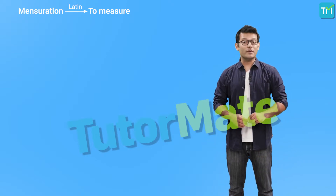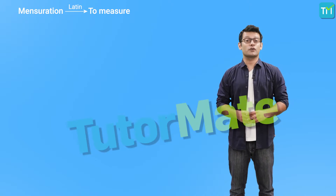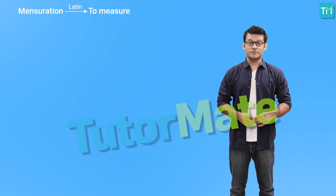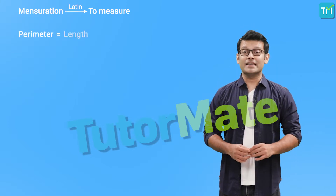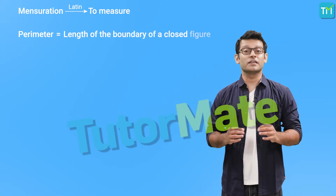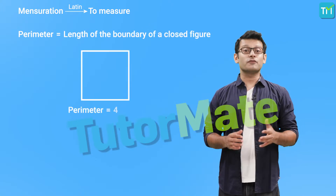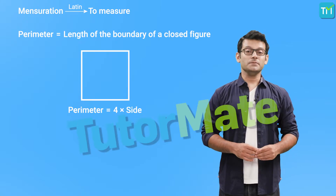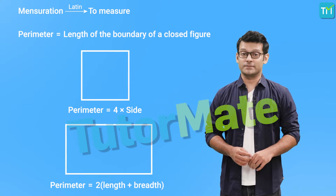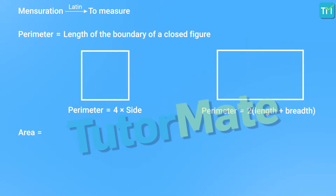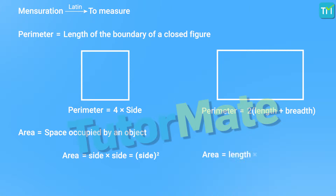We have already seen how to measure perimeter and area of a closed figure like a square or a circle. Perimeter is the length of the boundary of a closed figure. The perimeter of a square is 4 times its side, and the perimeter of a rectangle is twice the sum of length plus breadth. Area is the space occupied by an object, so the area of a square is side squared, and the area of a rectangle is length times breadth.